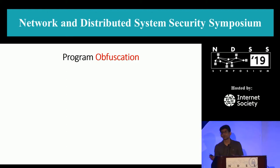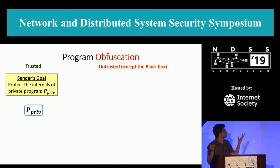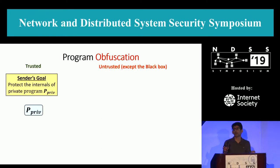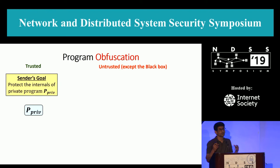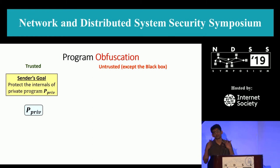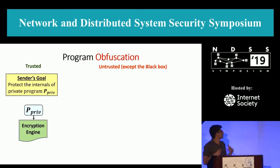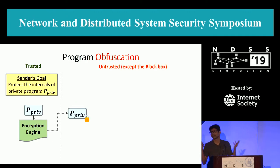To understand the premise of my paper, it's imperative we first understand the concept of program obfuscation in a systematic sense. Consider that a user has a private program — we'll call it P-PRIV — that has some proprietary internal information. The user wants to offload this program onto the cloud, but does not want the cloud provider to figure out the internals or the proprietary information from this program. So what the user does is encrypts the program and sends it to the untrusted system.